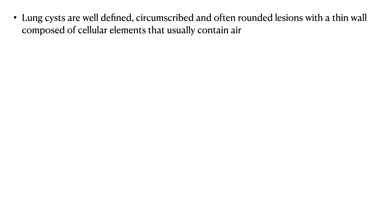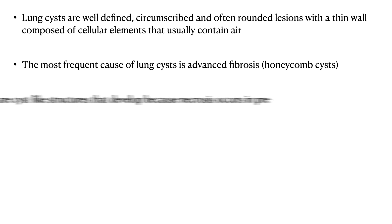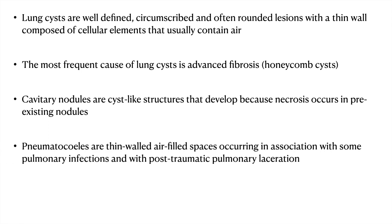The next is cystic lung disease. Lung cysts are well-defined, circumscribed, and often rounded lesions with a thin wall composed of cellular elements that usually contain air, but they can contain other fluids as well. The most frequent cause of lung cysts is advanced fibrosis, giving an appearance called honeycomb cysts. Cavitary nodules are cyst-like structures that develop because of necrosis and occur in a pre-existing nodule. Pneumatoceles are thin-walled air-filled spaces occurring in association with some pulmonary infection and with post-traumatic pulmonary laceration. Bronchiectasis may give you the appearance of lung cysts, but you have to look for signs to differentiate it from a true lung cyst.